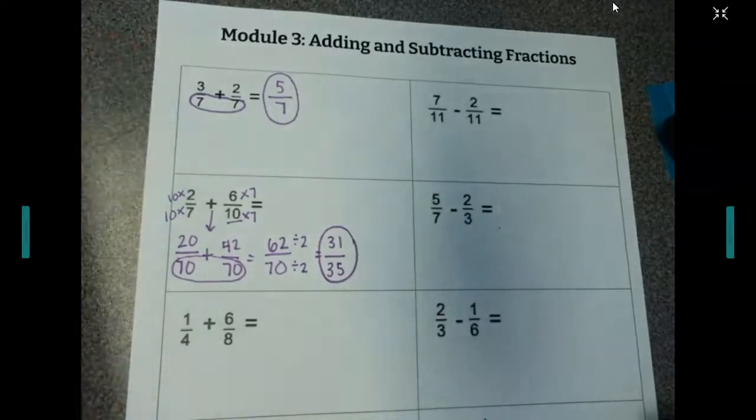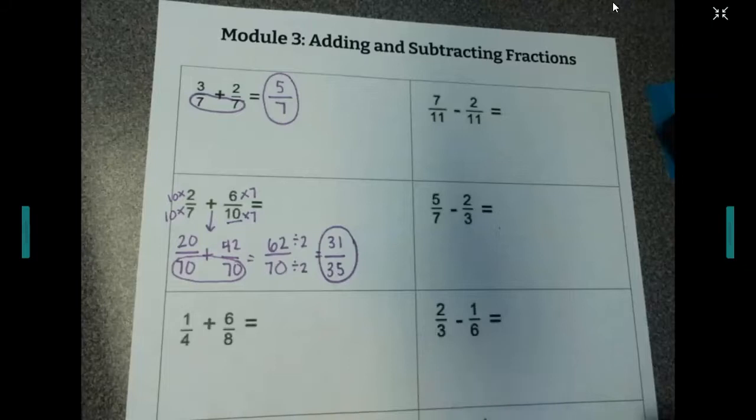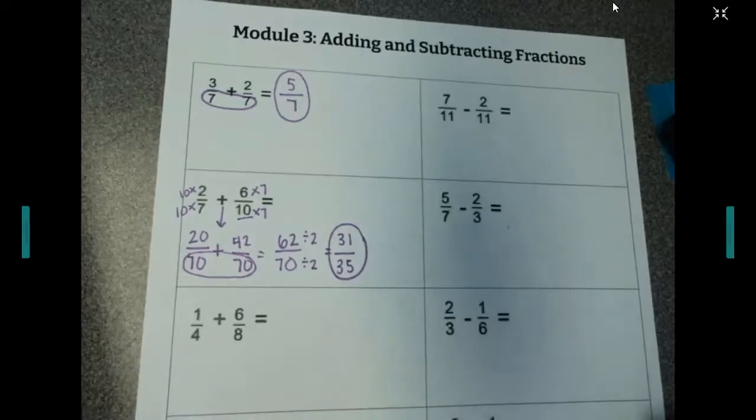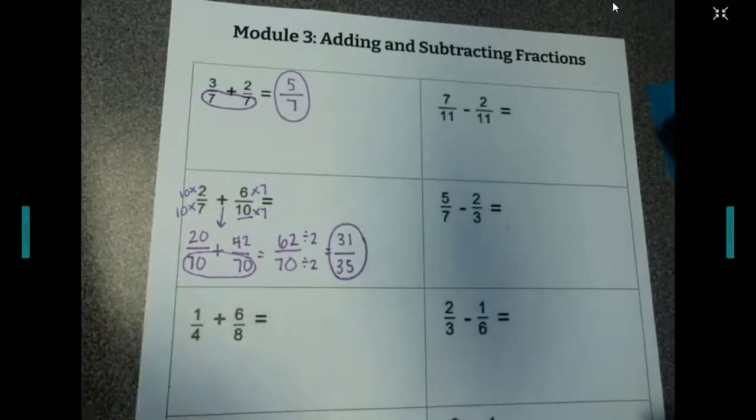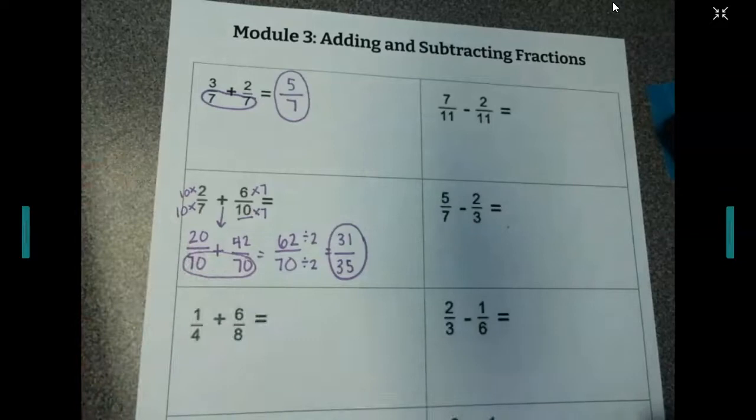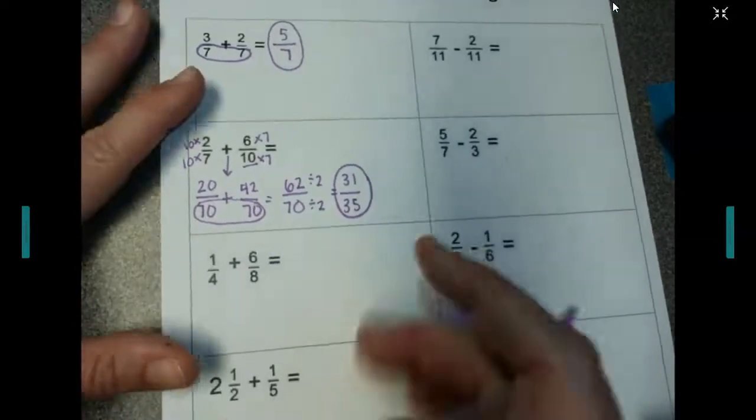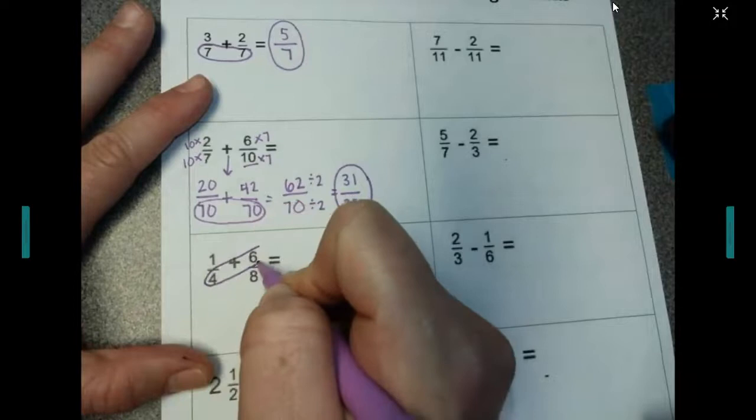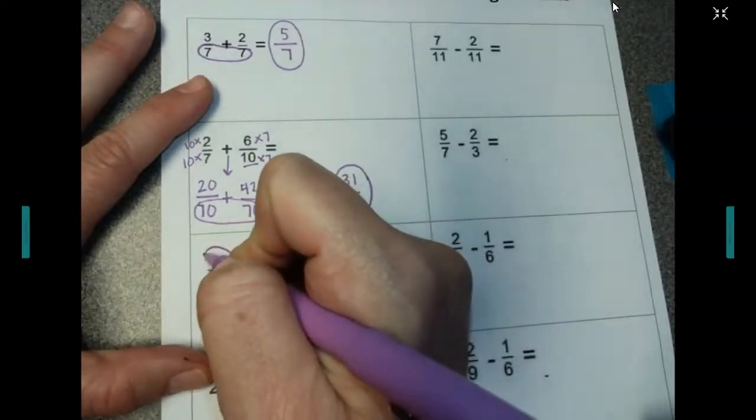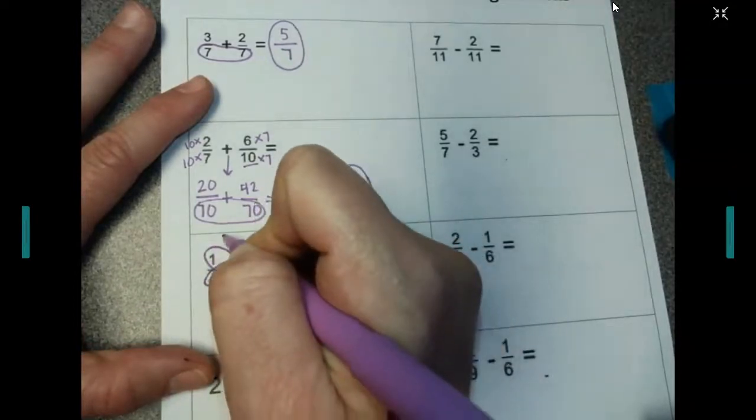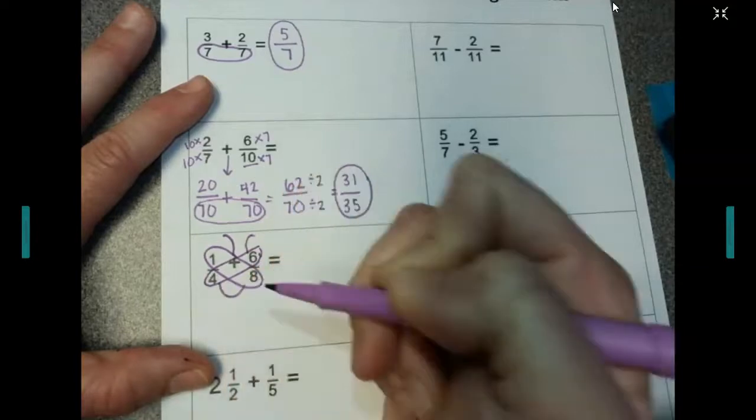Now, if you have a hard time thinking of common denominators, there's also something called butterfly. I'm going to show you that with the next problem. I don't care which style that you use or if you do a combination of finding a common denominator or butterfly, you can choose. This next one, I'm going to show you the butterfly. So I make the wings.